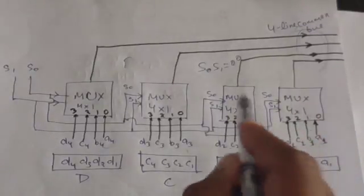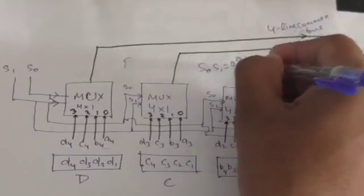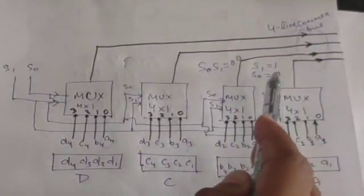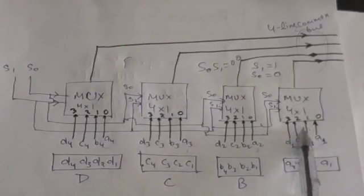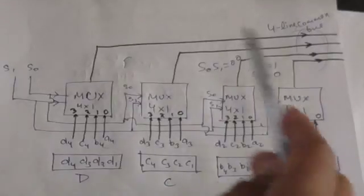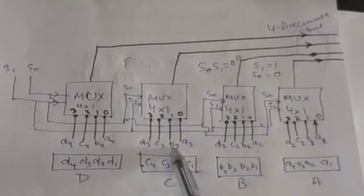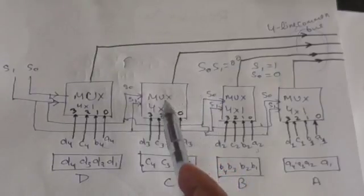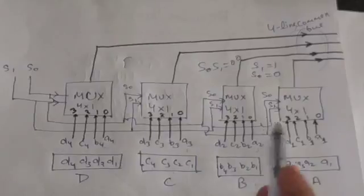Similarly, if S1 is 1 and S0 is 0, then input 1 of all four multiplexers is selected. The outputs become B1, B2, B3, and B4 respectively, so the bus lines receive the content of register B. Similarly, the content of registers C and D can be placed on the bus by changing the values of the selection lines.